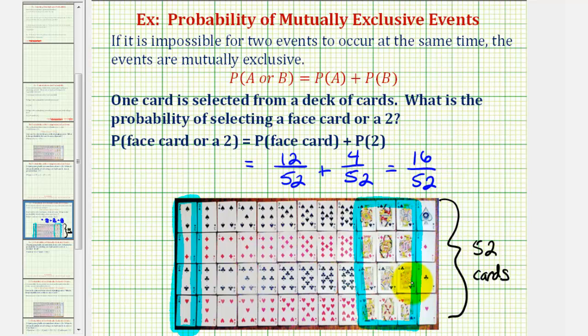And that should make sense because there are sixteen favorable ways of selecting a card that is a face card or a two out of a total of fifty-two cards.